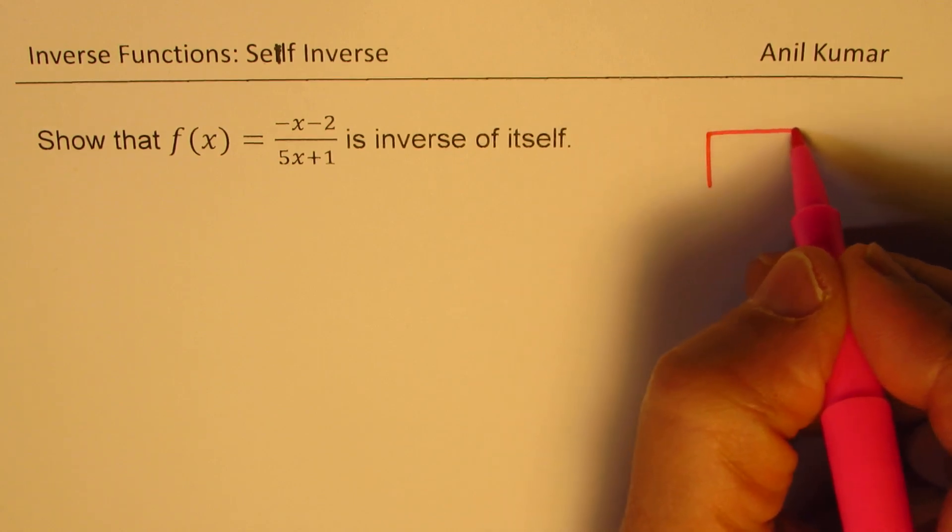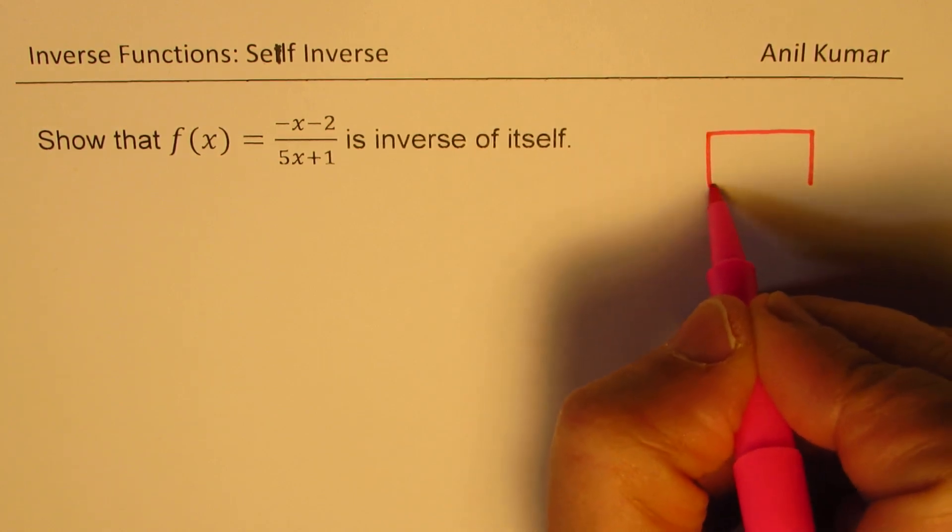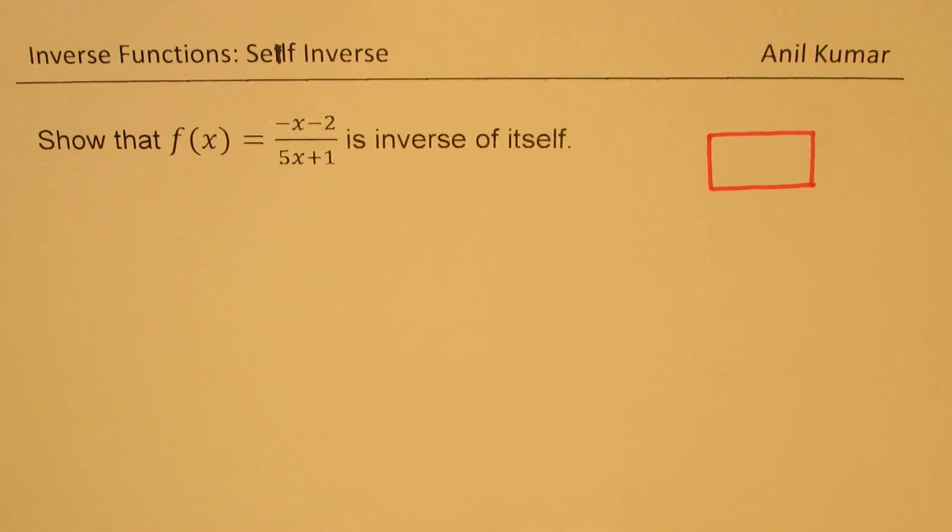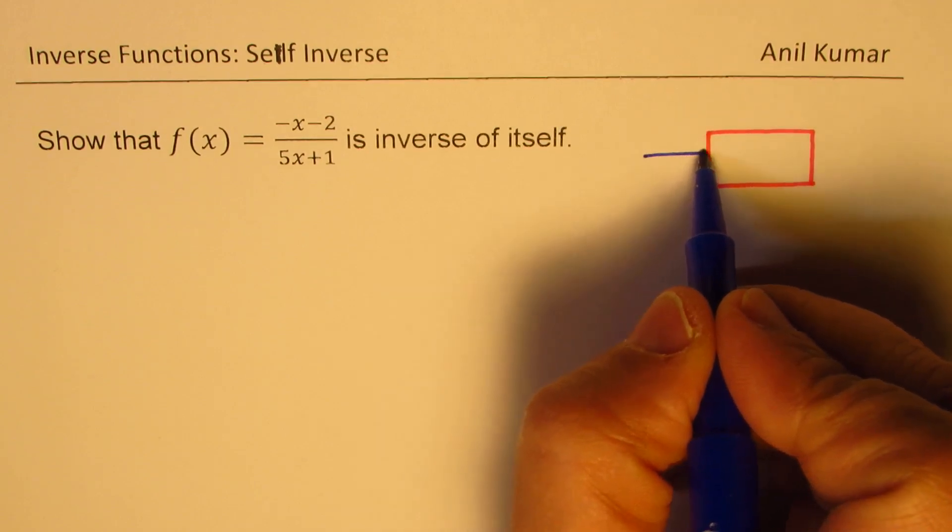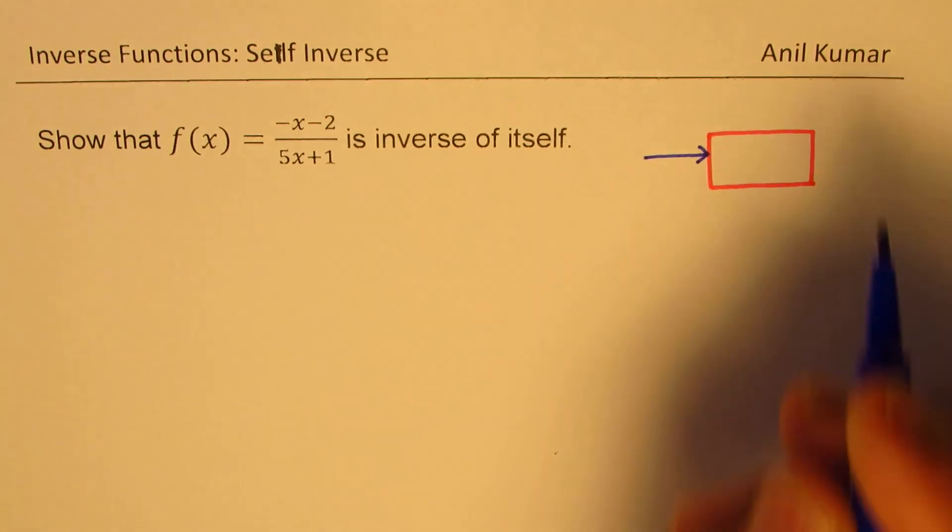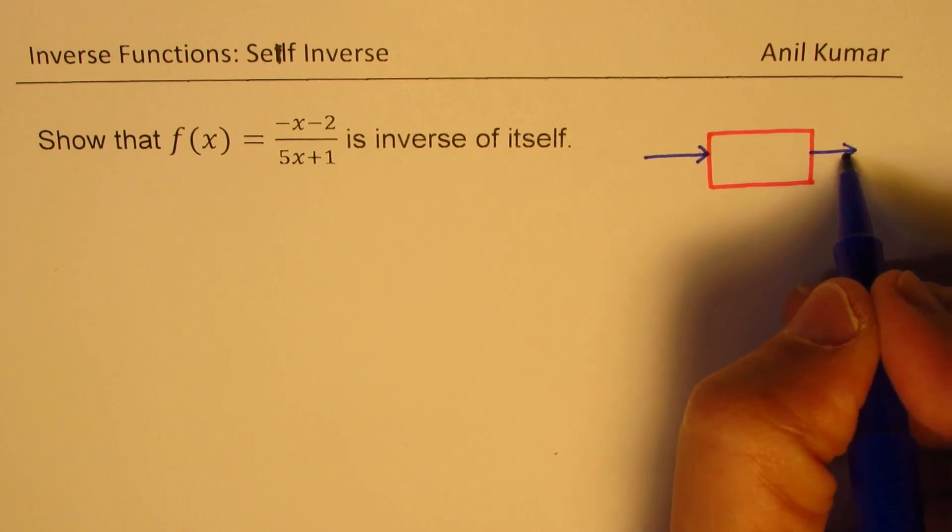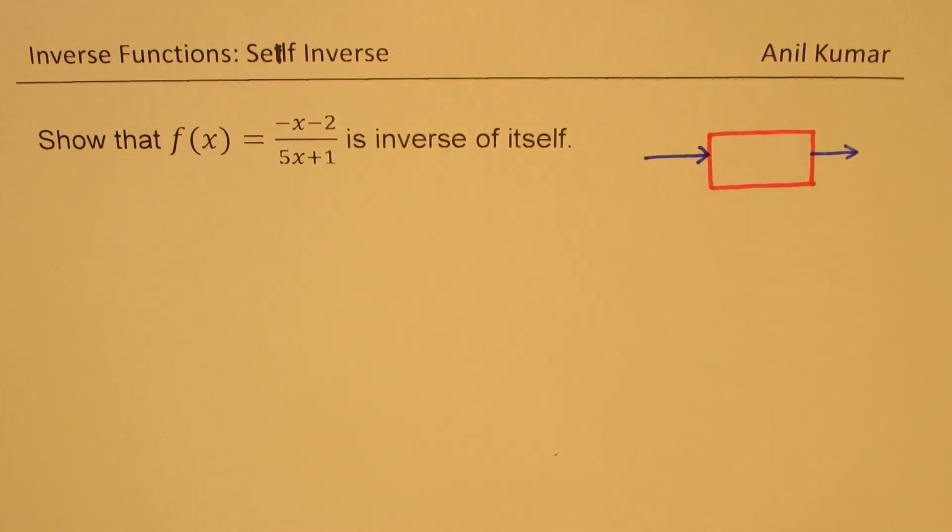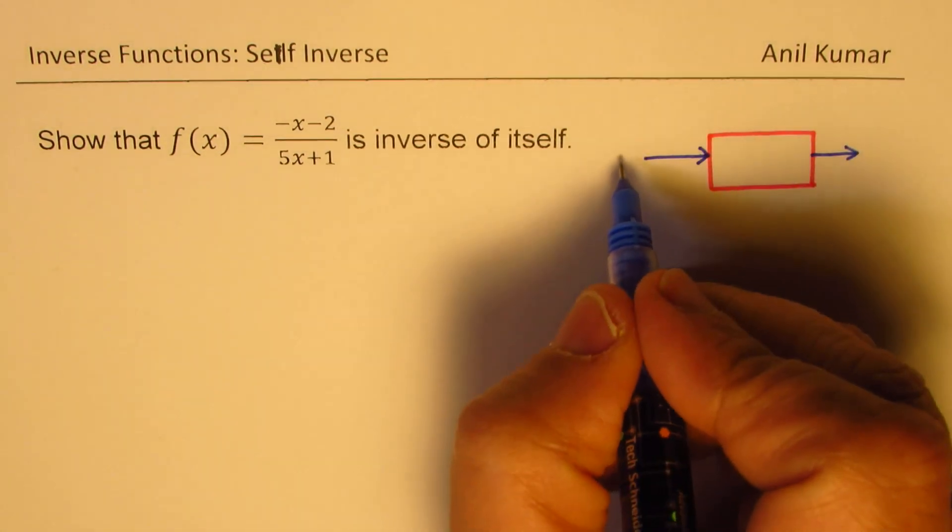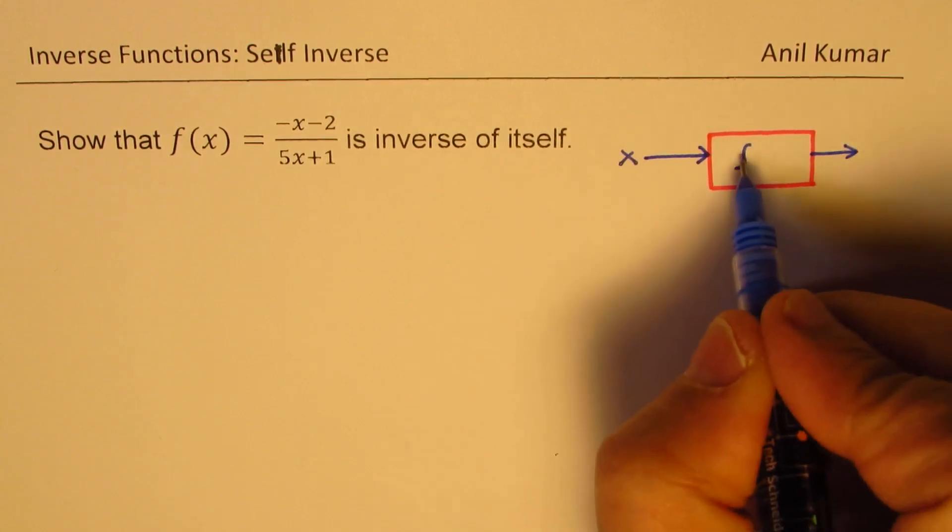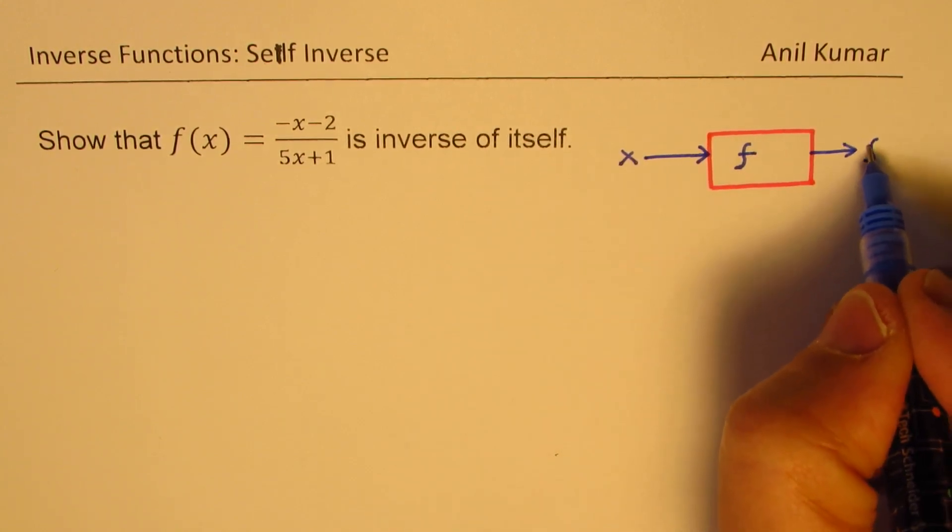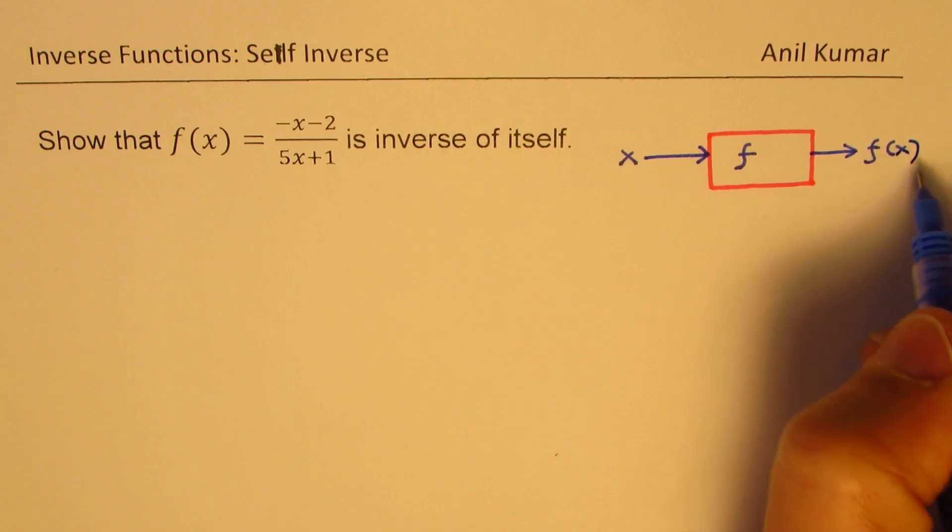When we're talking about inverse and self-inverse, it really means this. That we have a function, let us say we input something x in it and what we get is f of x. So for a function, we are inputting a value x and that's the function and what we get here is the output which is f of x.